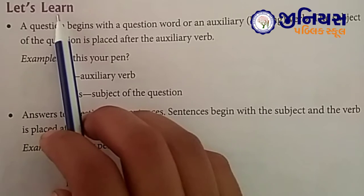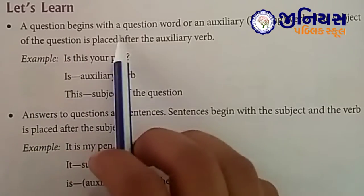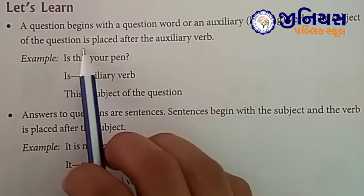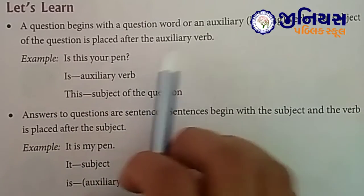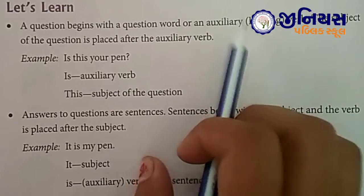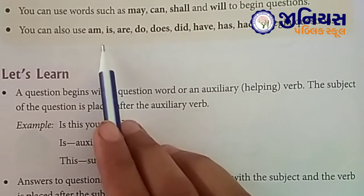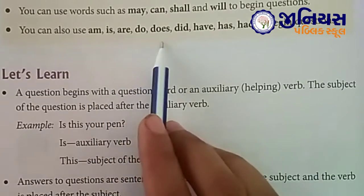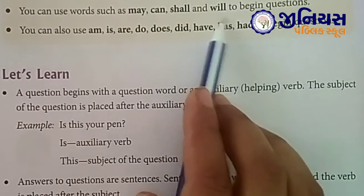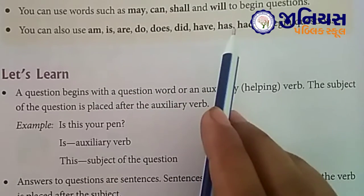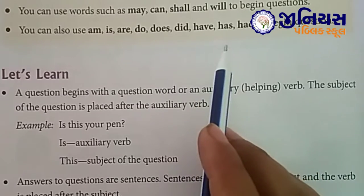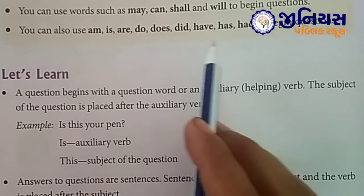Let's learn. A question begins with a question word or an auxiliary helping word. The subject of the question is placed after the auxiliary verb. Auxiliary verb kya hoti hain? Helping verb. And helping verbs kaun si hoti hain? Is, am, are, do, does, did, has, have, had, may, can, shall, and will. Yeh aapki helping verbs bhi kehlati hain.